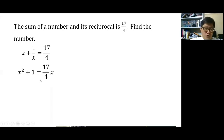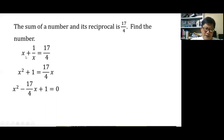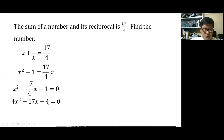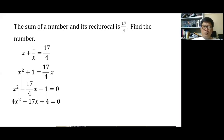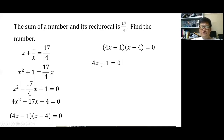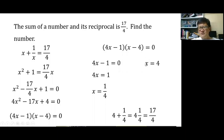Multiply throughout by 4 to eliminate the denominator: 4x squared minus 17x plus 4 equals 0. Factorizing gives (4x minus 1)(x minus 4) equals 0. Applying the zero product property: 4x minus 1 equals 0 gives x equals 1 quarter, and x minus 4 equals 0 gives x equals 4.